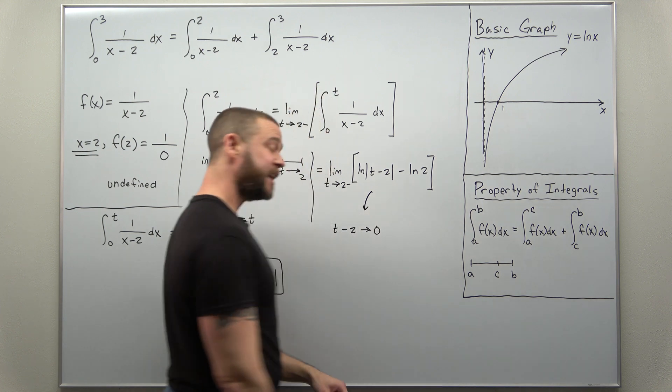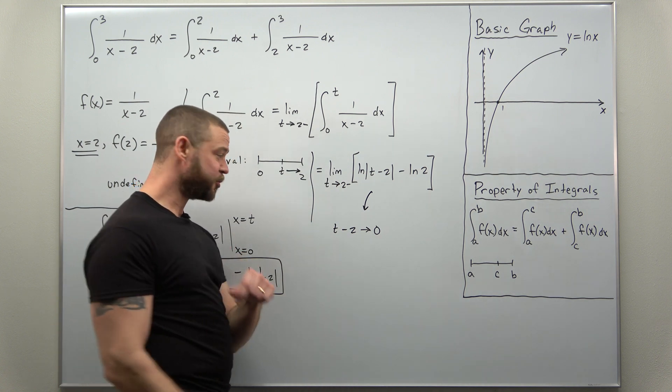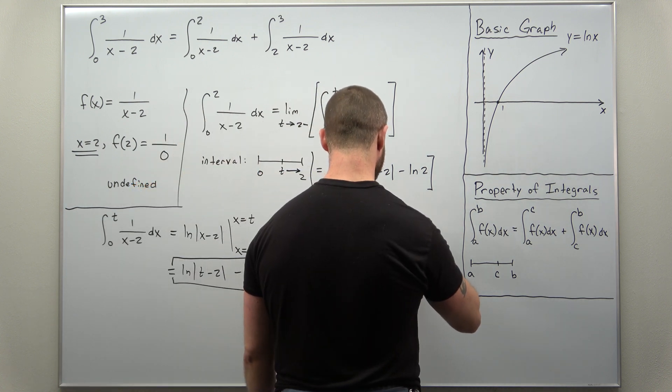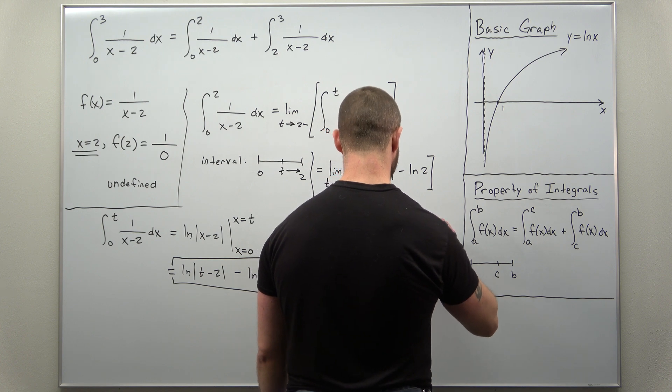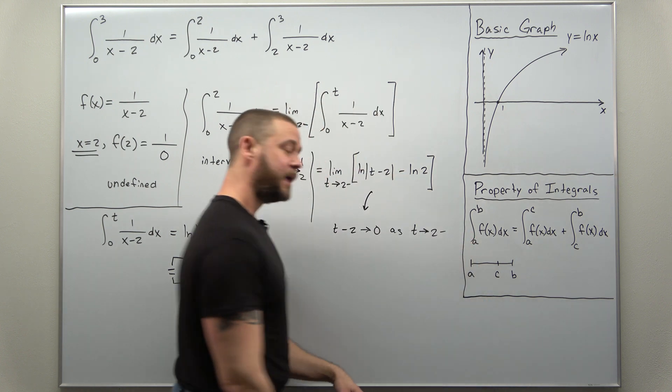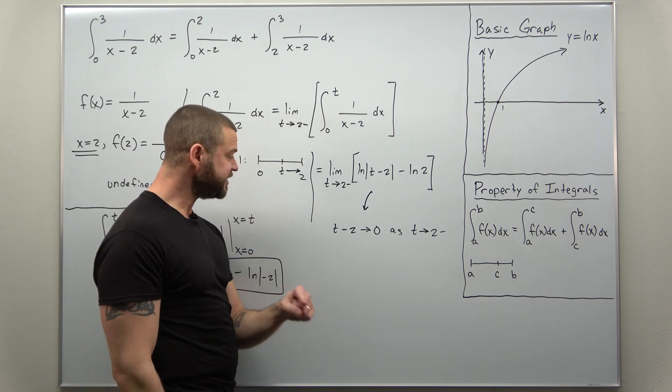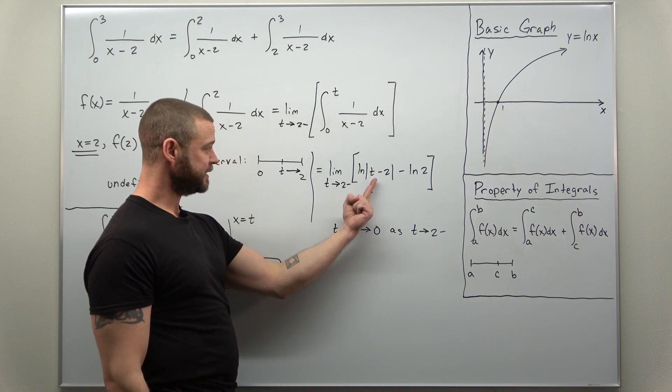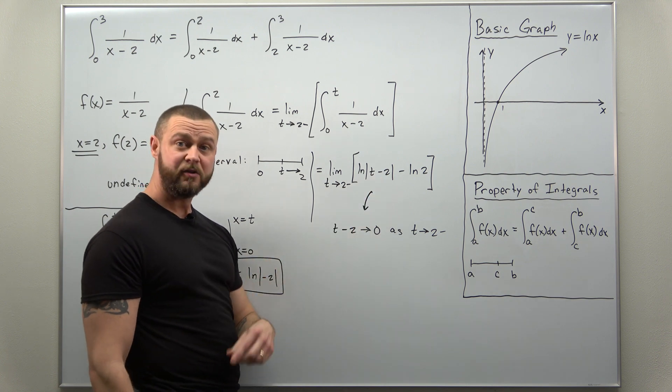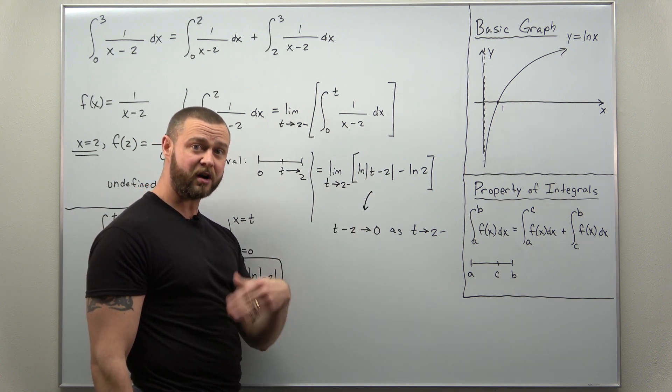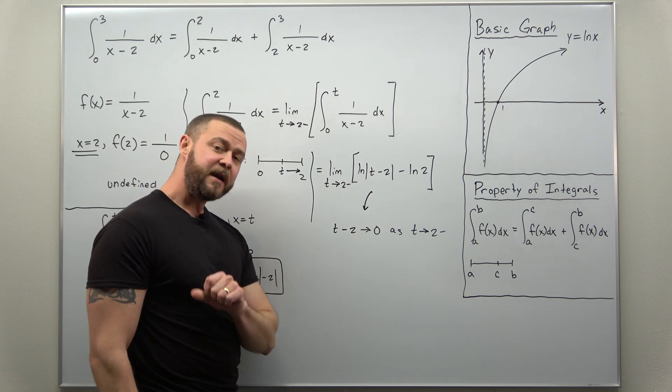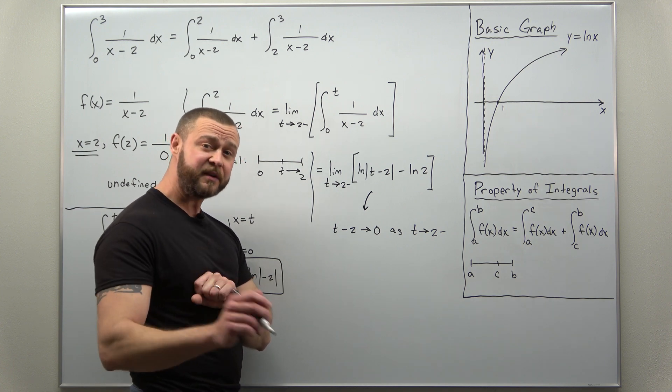And we're going to say t minus 2, this approaches 0 as t approaches 2. It might be easier to see that if you just plug in t equals 2, you'll get that comes out to natural log of 0. To make sure that you see exactly what happens to this limit, let's refer to the graph.